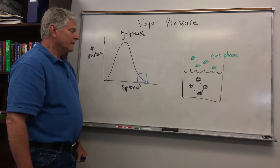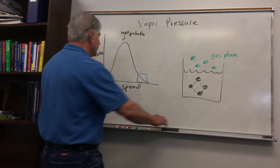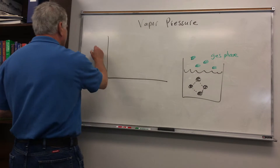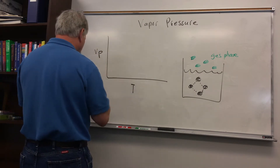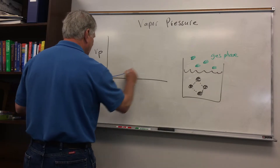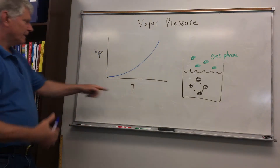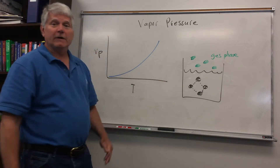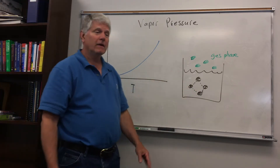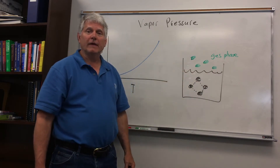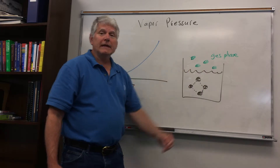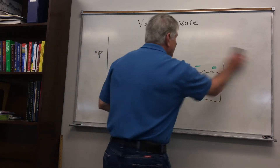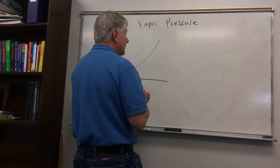If we look at the vapor pressure of a liquid versus temperature, we get a curve that looks like this — it's exponential. So as the temperature increases, the vapor pressure increases, because as the temperature increases, the root mean square speed of the particles increases, and so more particles have enough energy to break out of the liquid phase into the gas phase. The vapor pressure rises as the temperature rises.